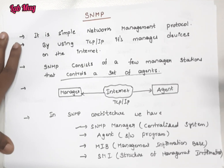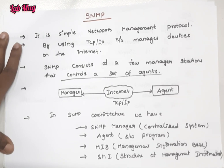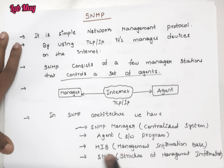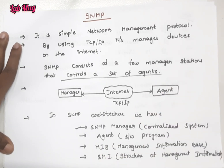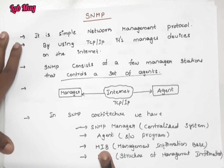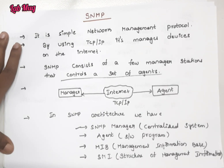The agent collects information from the local environment and sends signals to the SNMP Manager. The next components are MIB, that is Management Information Base, and SMI, Structure of Management Information. These two things are used for management purposes.